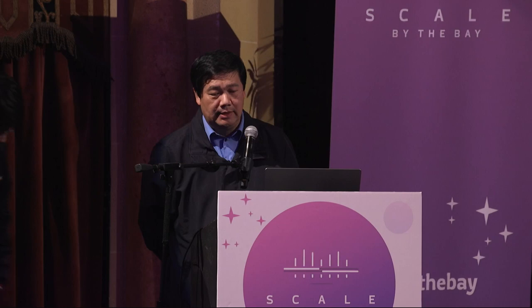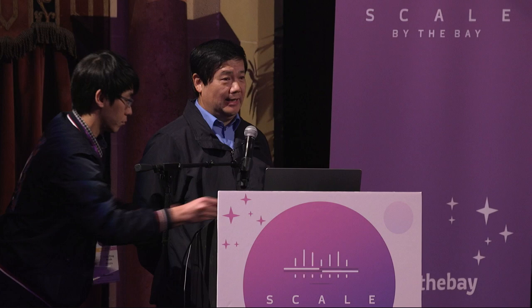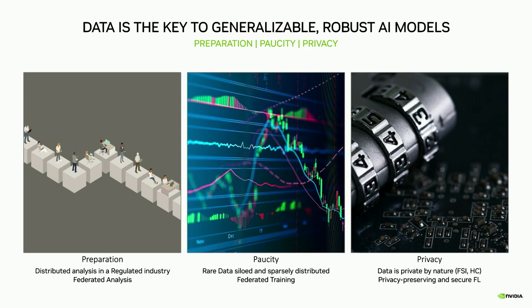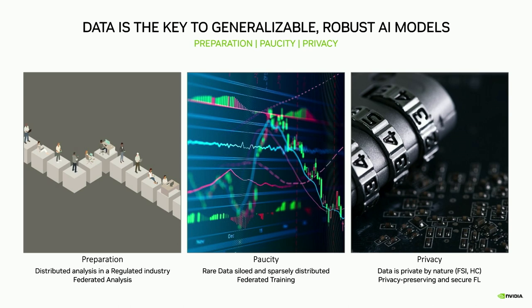For FSI — financial service industry — the regulation is even more difficult to overcome, because it's really hard to have two different organizations exchange or share sensitive information. Healthcare faces similar issues. So how do we, from the machine learning and deep learning side, overcome these difficult situations to get all the data we want and train the models we need?